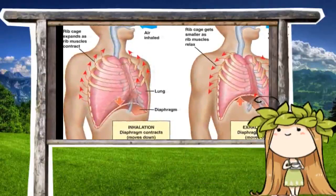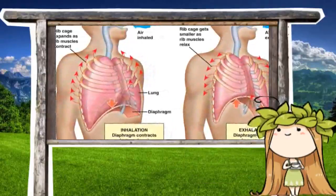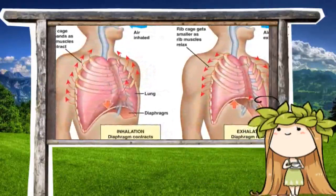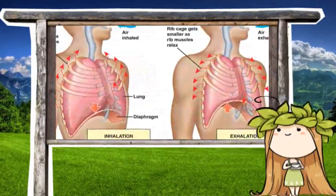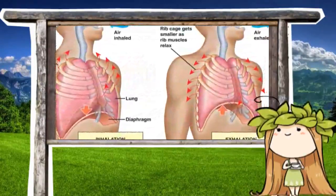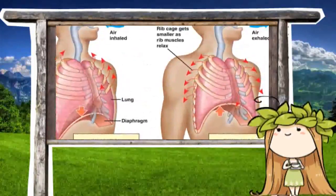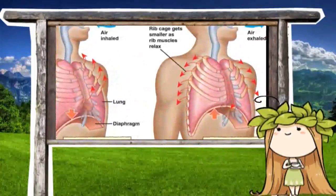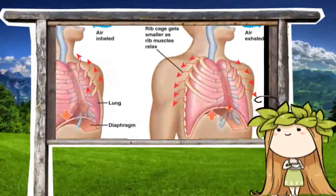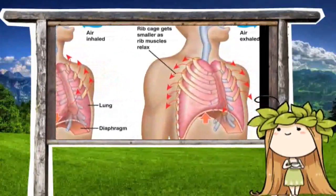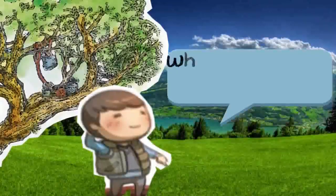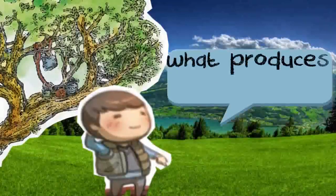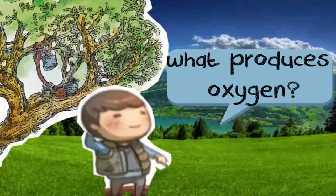When you inhale, you take in oxygen. When you exhale, you release the waste gas carbon dioxide. If something used carbon dioxide and released oxygen, it would balance your use of oxygen. If we are the producers of carbon dioxide, what then produces oxygen?